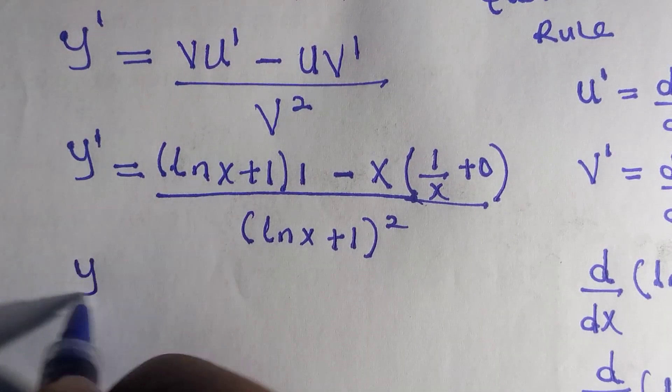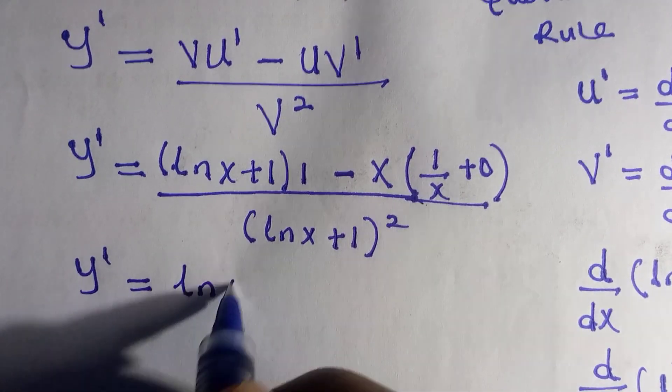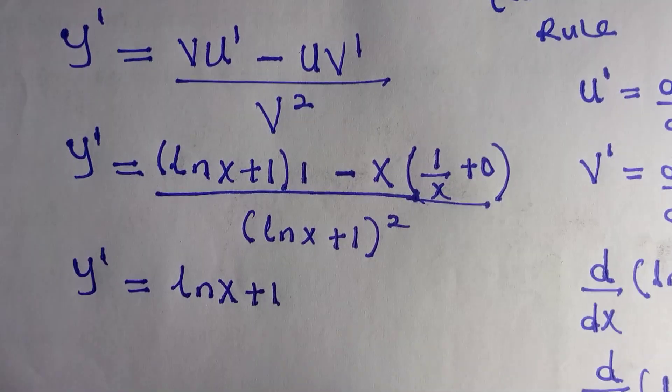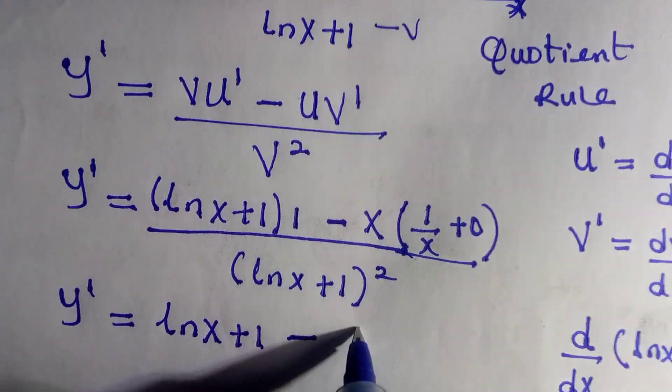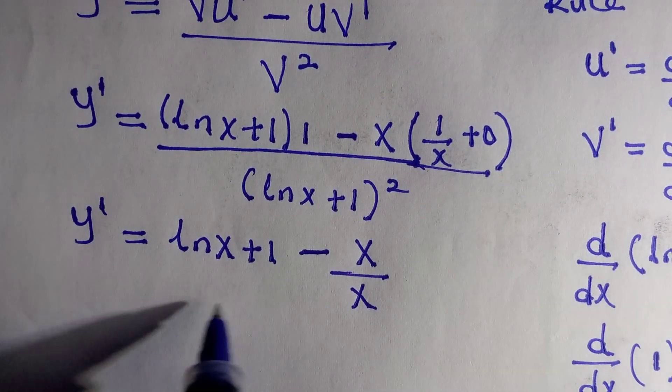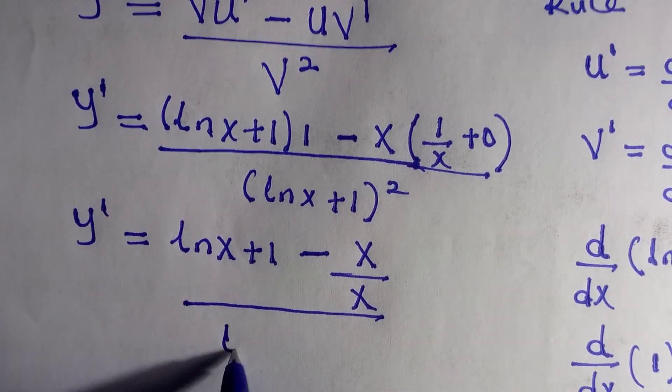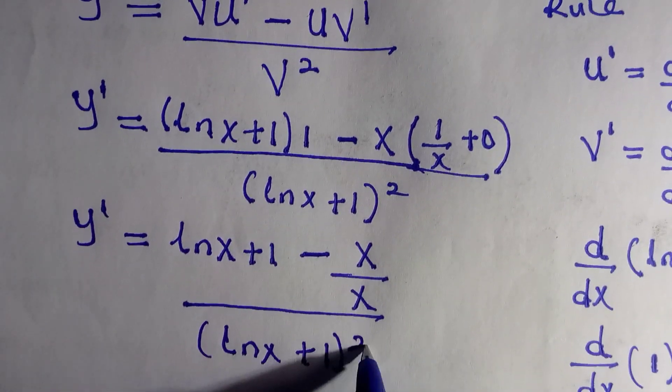Then y prime equals to, if I open the bracket we have ln x plus 1 minus, by opening the bracket as well, x multiplied by 1 that is x divided by x, and x times 0 is still 0, everything divided by ln x plus 1 all to the power of 2.